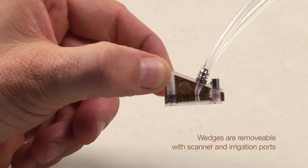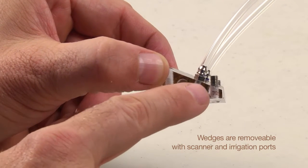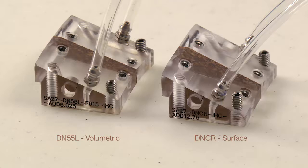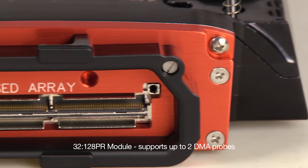DMA probe wedges are removable, come with scanner and irrigation ports, and are designed for either volumetric or shallow surface inspection similar to conventional UT-TRL creeping wave probes.